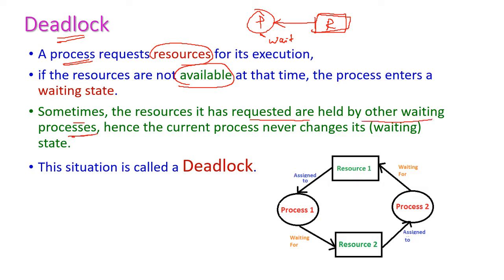This particular resource is held by some other waiting process. Hence, the current process never changes its state — that is, it remains in the waiting state and should always wait for that particular resource. Hence, this situation is called deadlock.